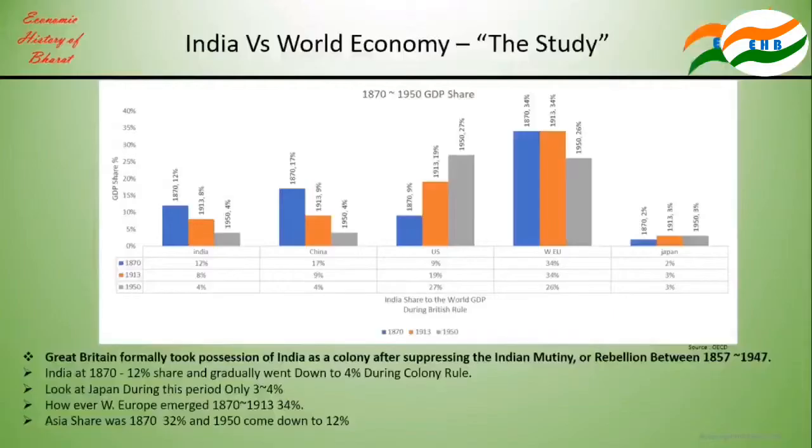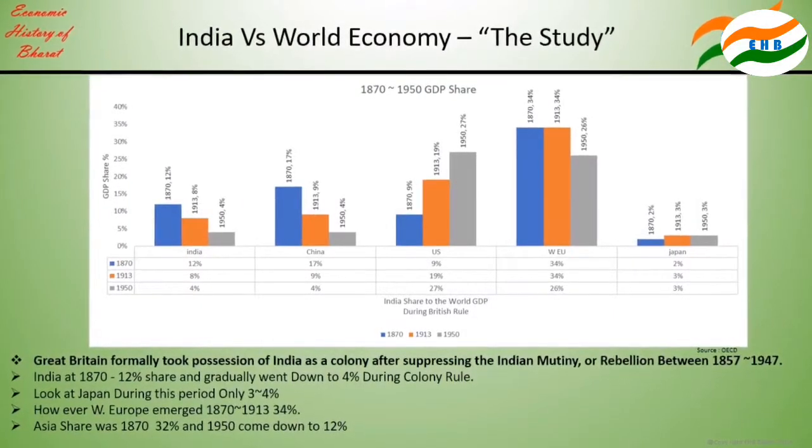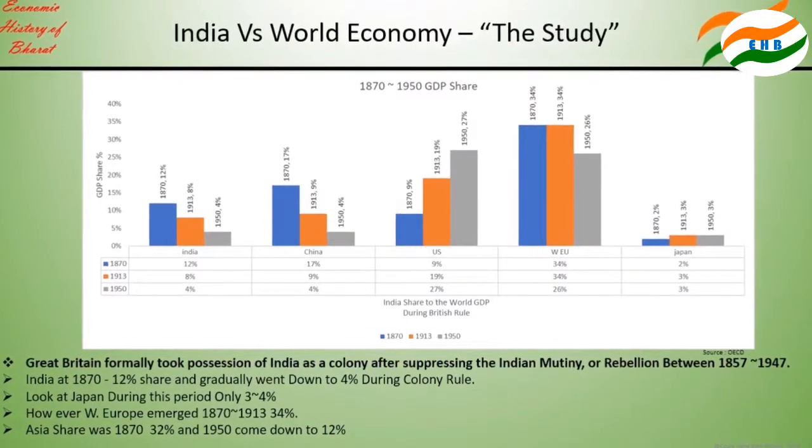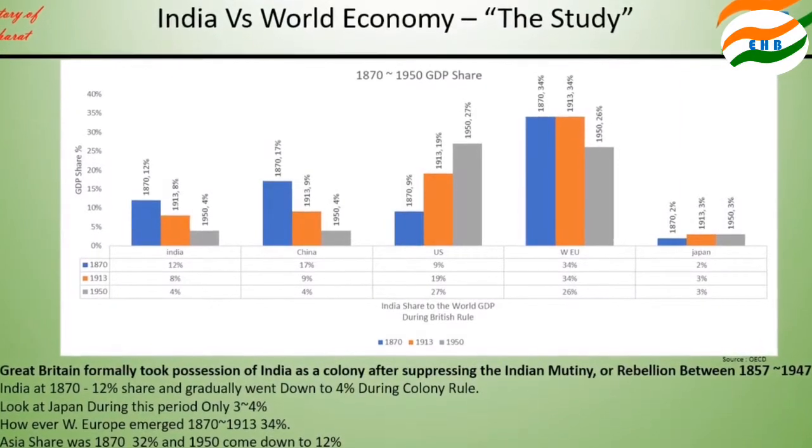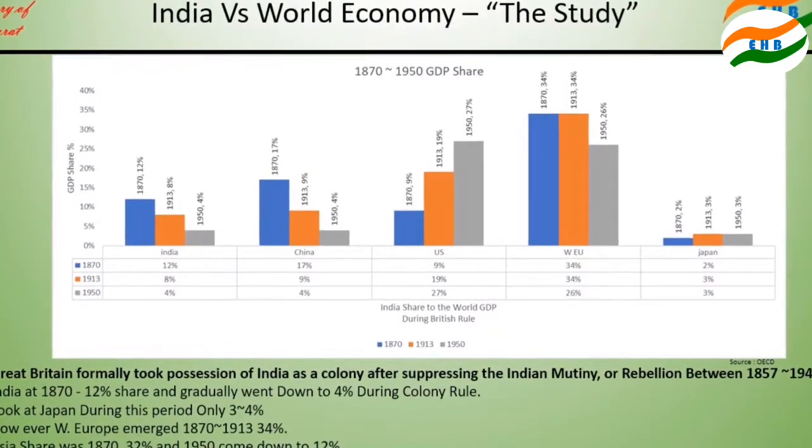Looking at Western Europe, in 1870 and also 1913, their share was 32 percent. That means during this period — from the 0th year to 1870 — Europe started growing to 34 percent while our share came down. By 1870 to 1913, Western Europe had become 34 percent and a dominating force in the world economy, which was actually our situation back in the 0th year.